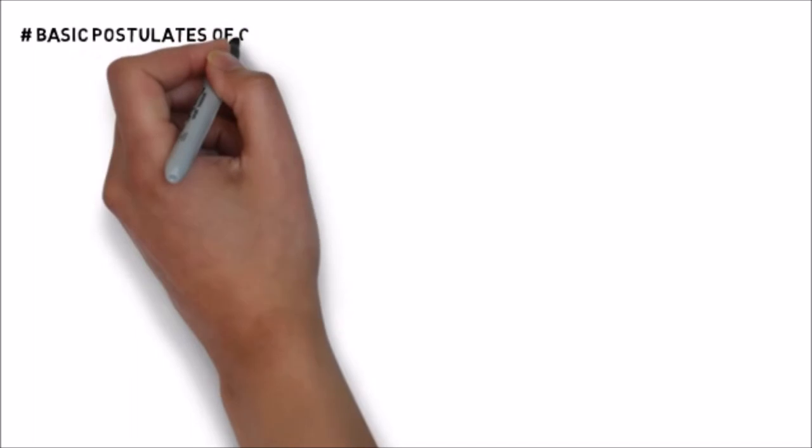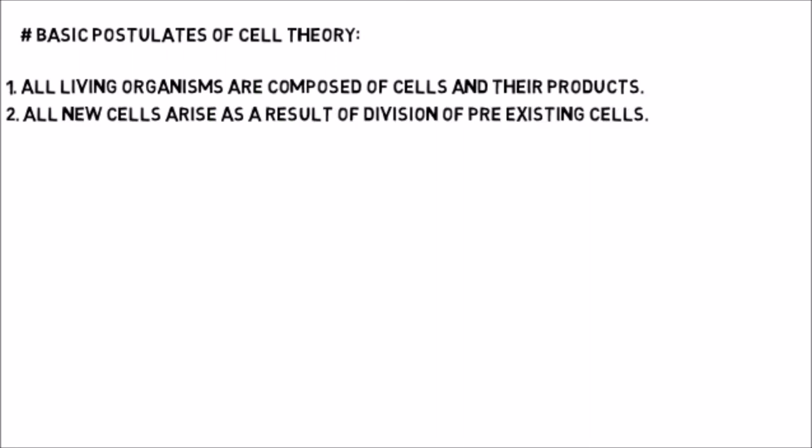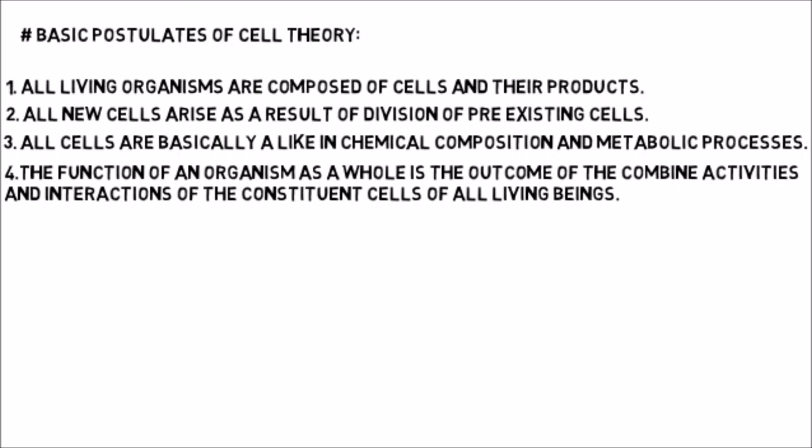From all the above discoveries, the basic postulates of cell theory are: 1. All living organisms are composed of cells and their products. 2. All new cells arise as a result of division of pre-existing cells. 3. All cells are basically alike in chemical composition and metabolic processes. 4. The function of an organism as a whole is the outcome of the combined activity and interaction of the constituent cells of all living beings.